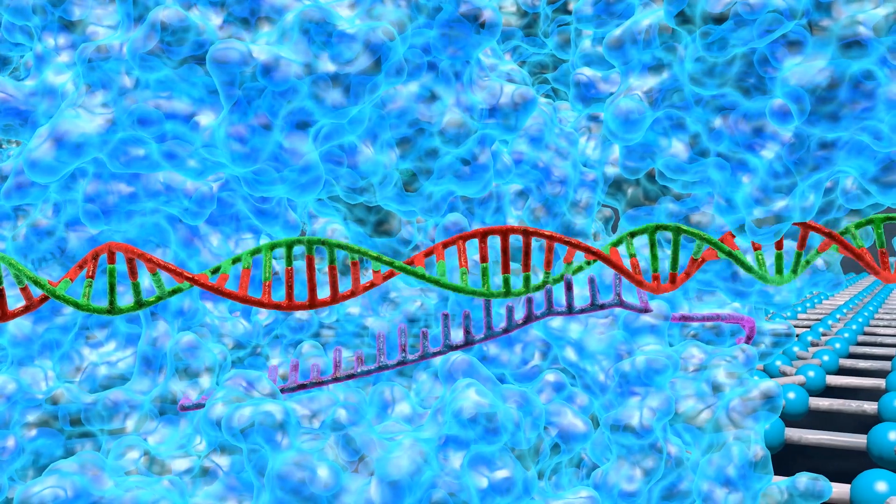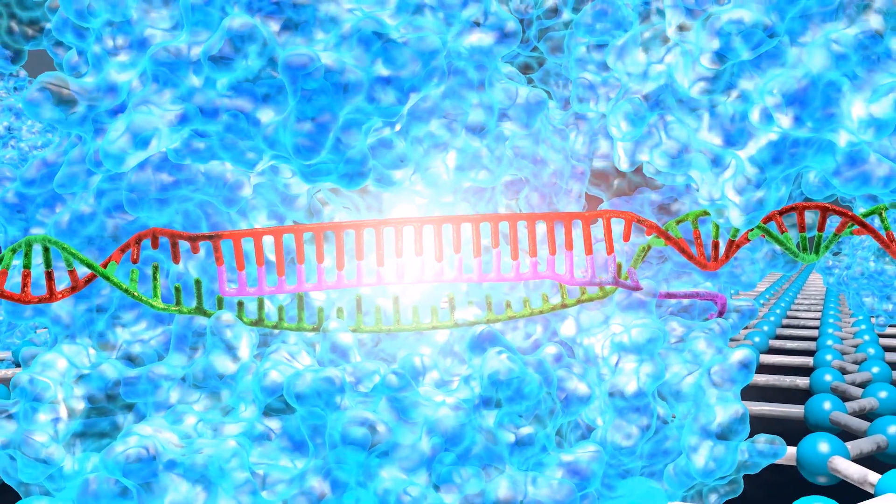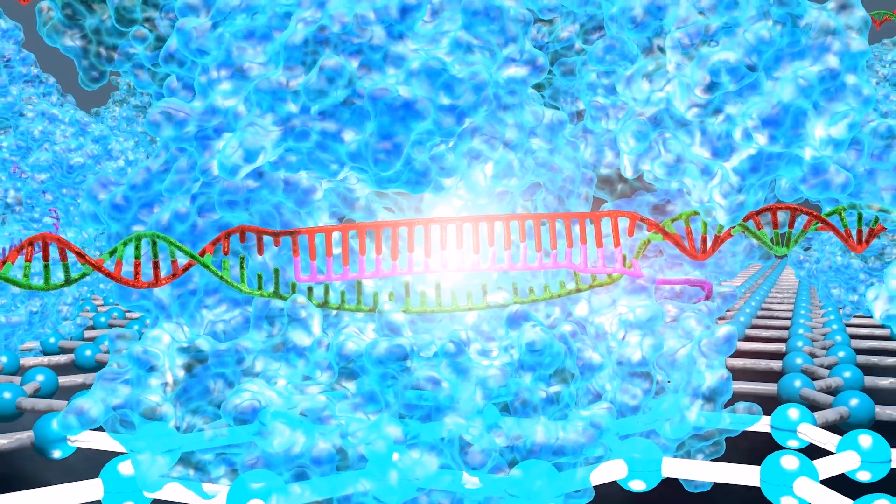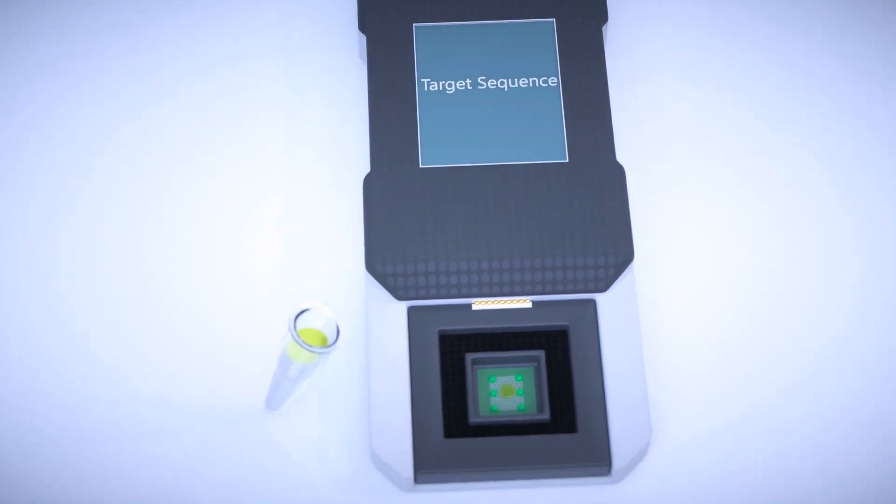But if it scans and it finds its target, then it will bind to it. Then this binding will create an additional charge on top of the graphene surface and this can be sensed with CRISPR chip.